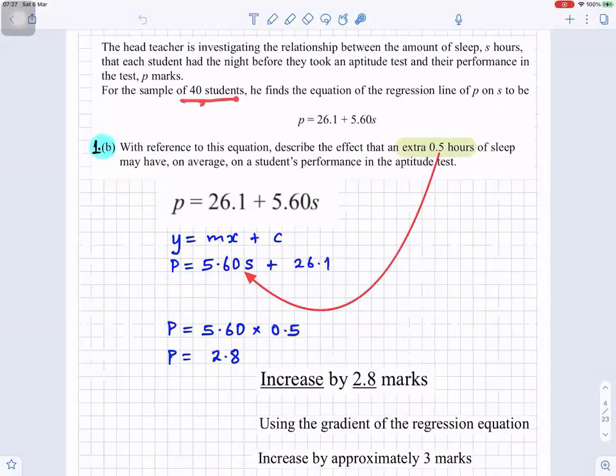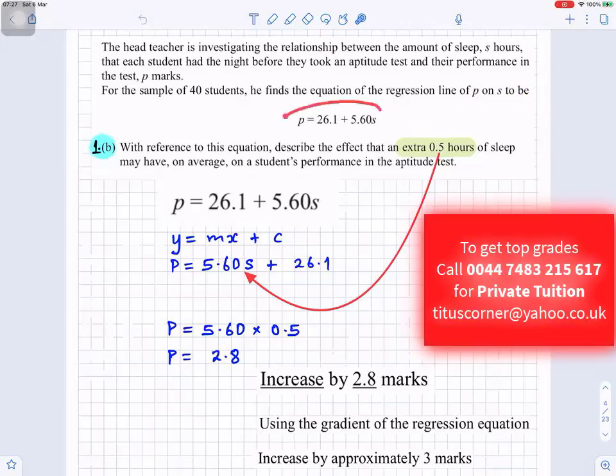So for the sample of 40 students, he finds the equation of the regression line of p on s to be p = 26.1 + 5.60s. With reference to this equation, describe the effect that an extra 0.5 hours of sleep may have, on average, on a student's performance in the aptitude test. So if you increase the amount of sleep by 30 minutes, would the students do better? How would the students perform in the aptitude test?